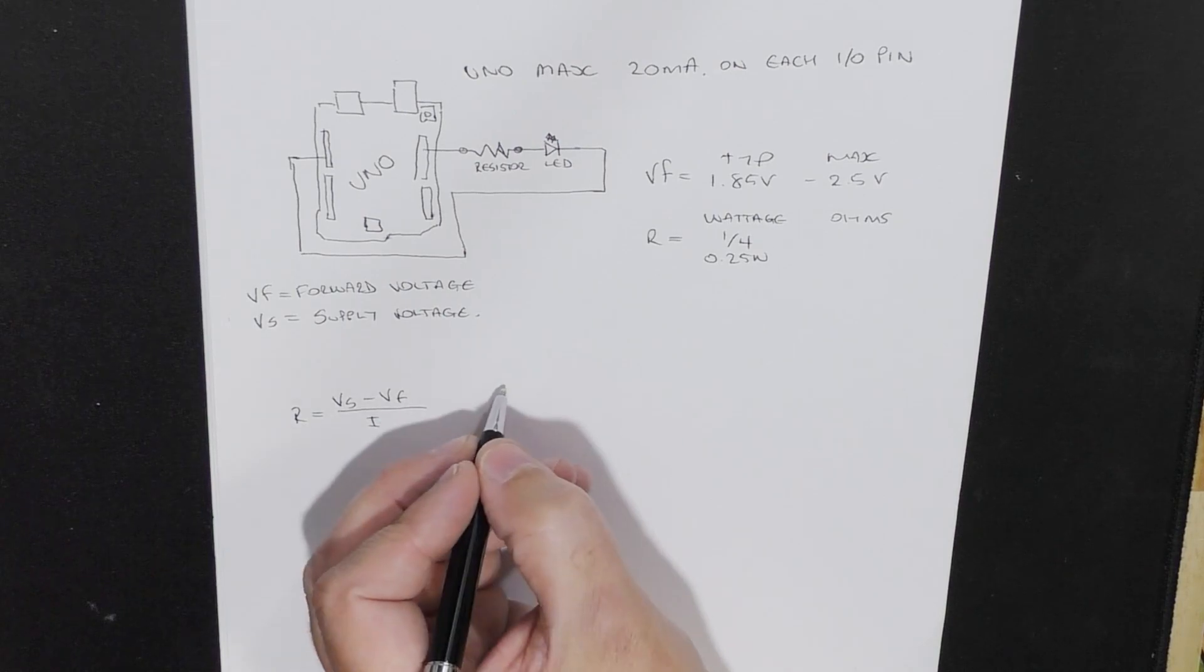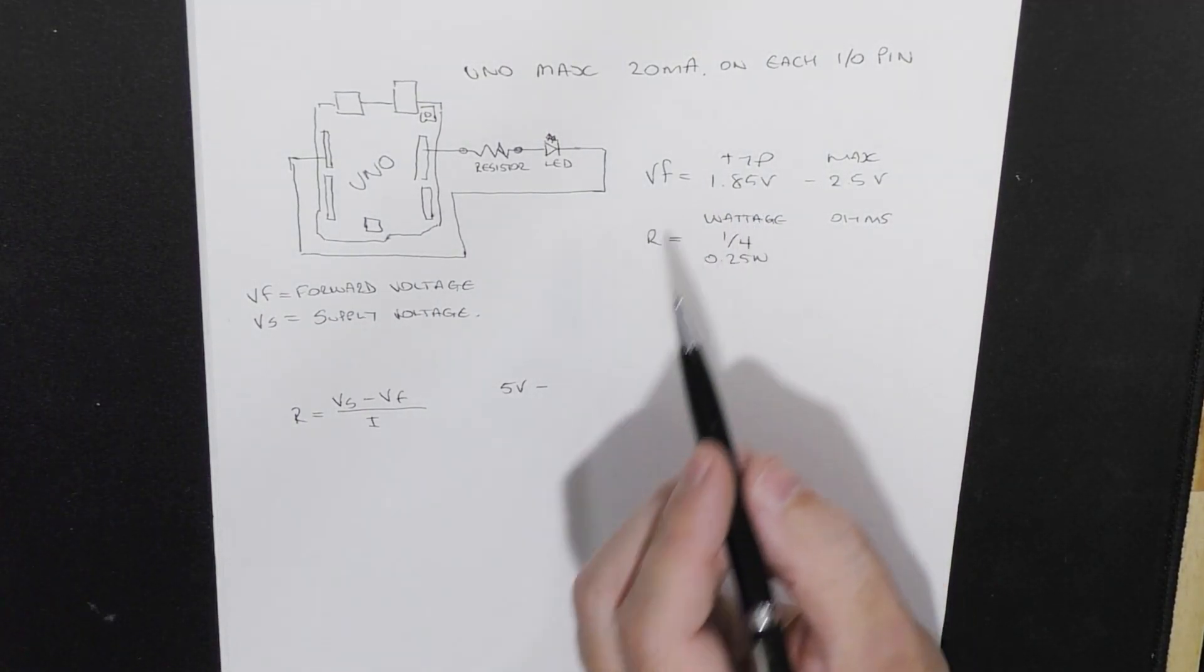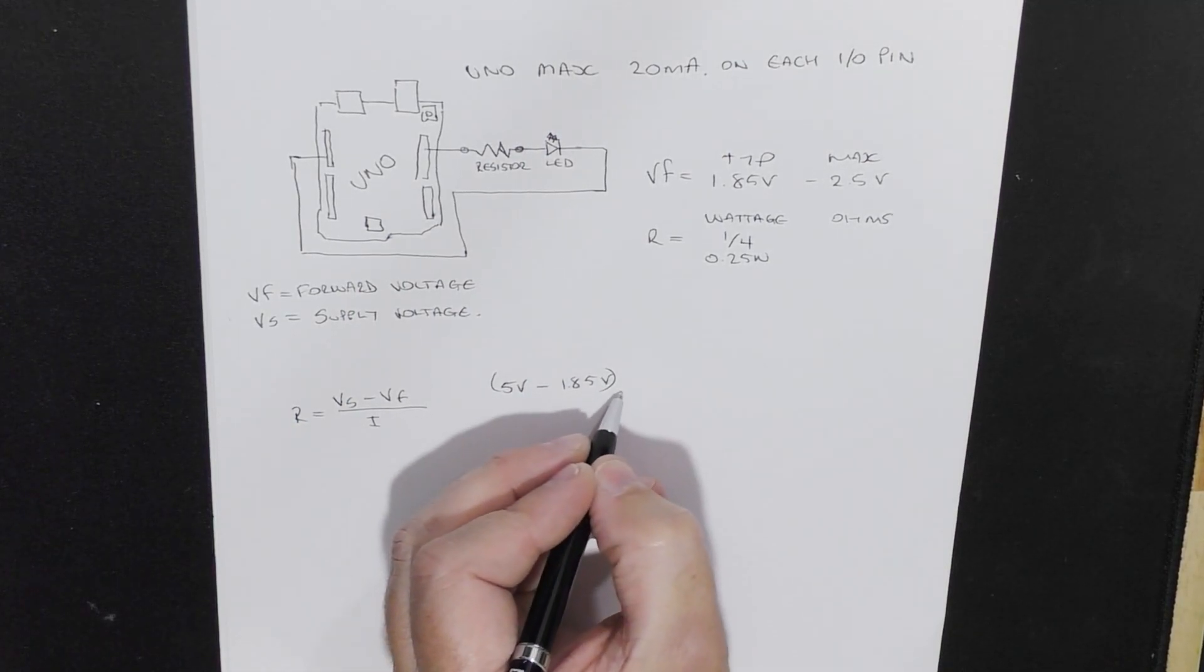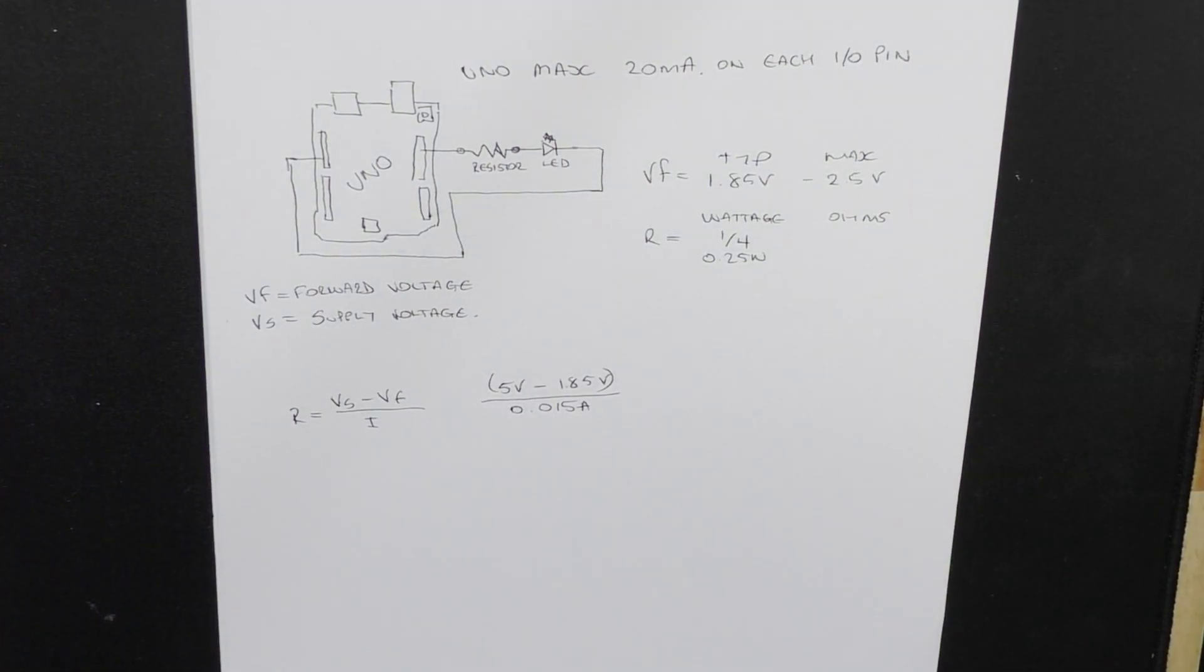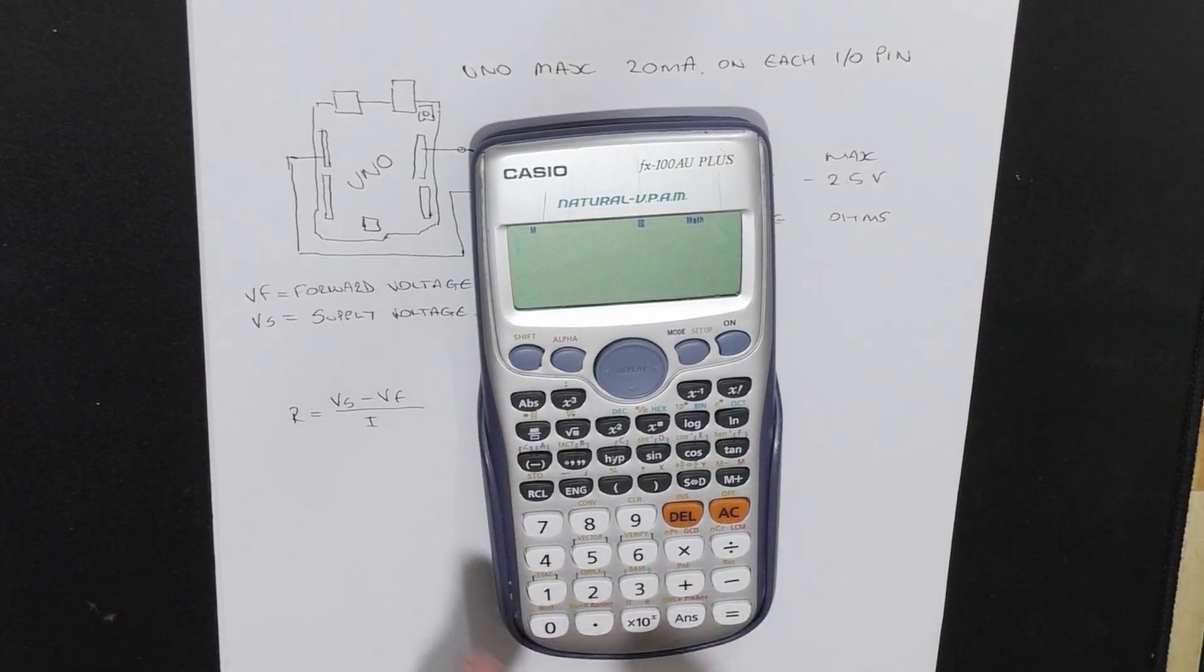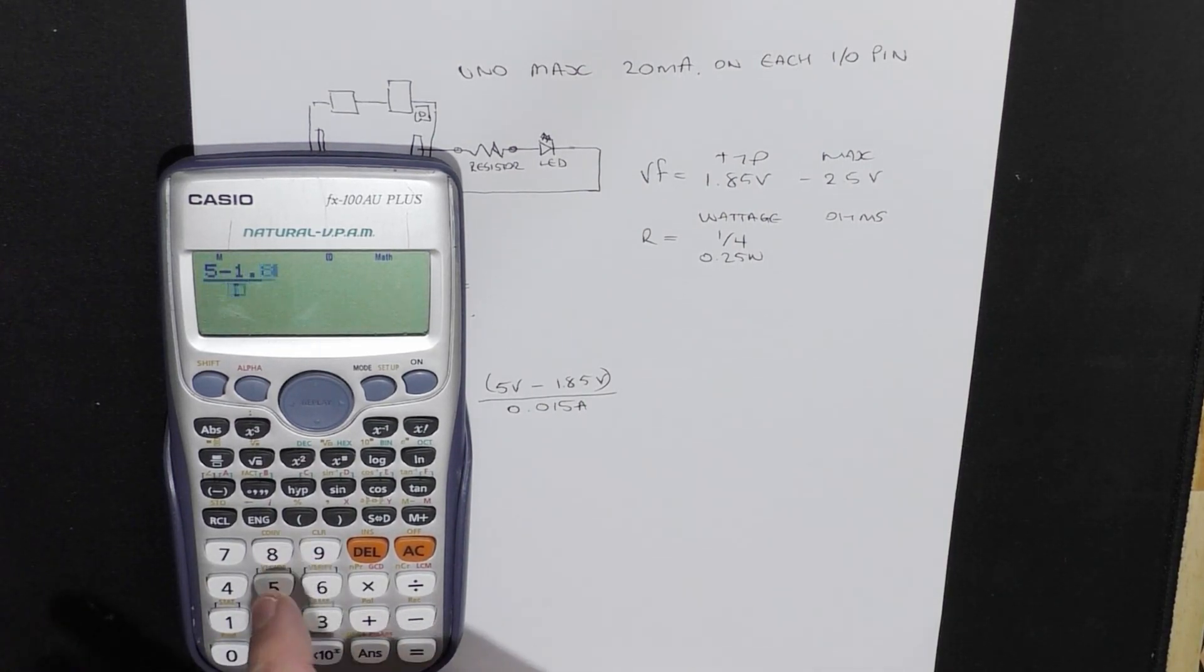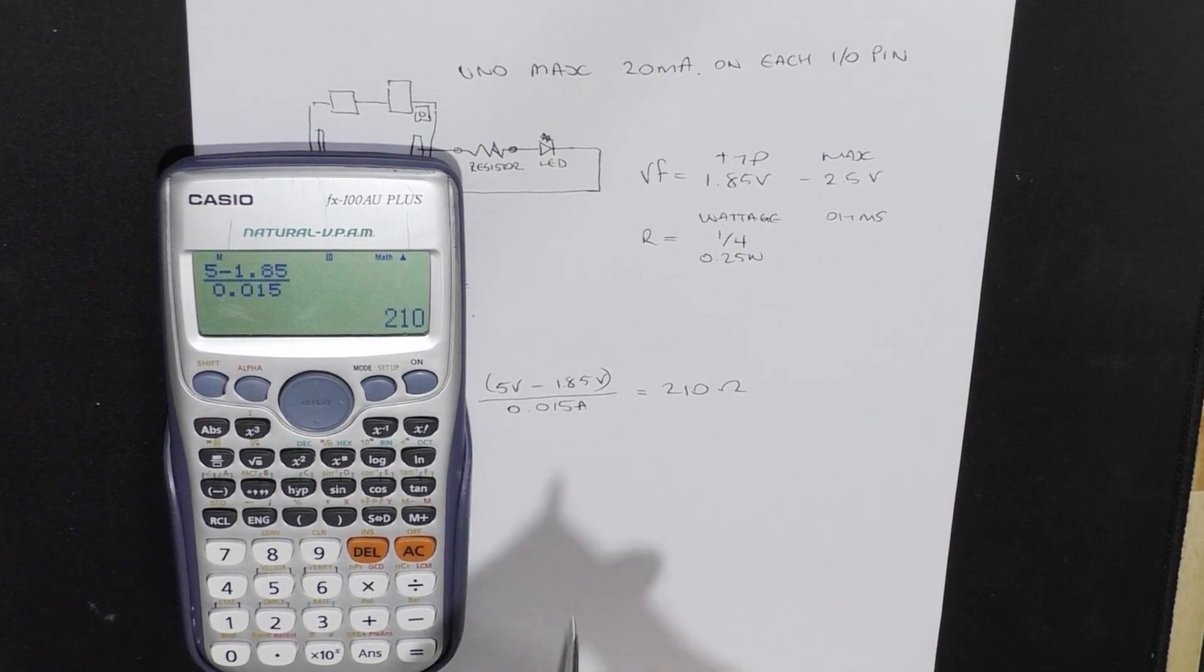So let's fill in the numbers. So an UNO pin outputs 5 volts. So then we want 1.5 volts of the typical voltage. I'm going to divide that by the current that we want. And that will give us the ohms. So if I will turn that around so you can see it. You've got 5 minus 1.85 over 0.015 equals 210 ohms.